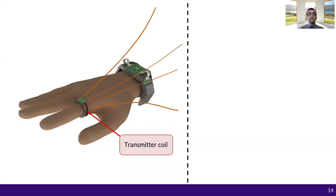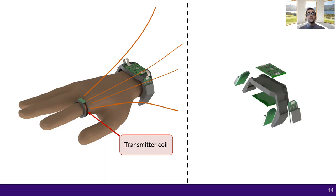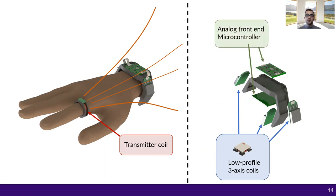On the wristband, you can see the three sensors here. They are low profile sensors that contain three axes each and measure the magnetic field at three different locations. Since we know the geometry of these sensors, we can estimate the pose of the ring.